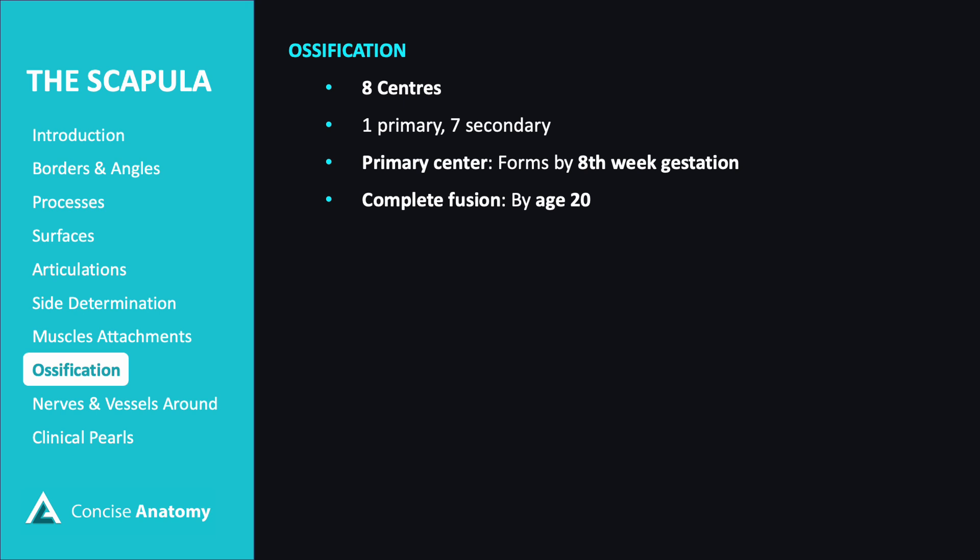The scapula forms through ossification from eight centers — one primary in the body and seven secondary. The primary center and the initial secondary center in the coracoid process develop by the eighth week of gestation and the first year after birth, respectively, and fuse by age 15. The remaining secondary centers emerge around puberty and fuse by age 20.